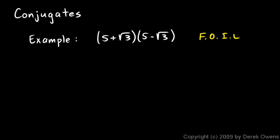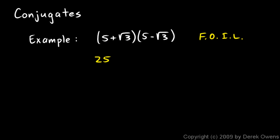I multiply first, outer, inner, and last. My first two terms are 5 times 5, so that's 25. The outer two terms are 5 times the negative square root of 3, so that's negative 5 root 3. The inner two terms are the square root of 3 times 5, which is positive 5 root 3. And my last two terms are square root of 3 times the negative square root of 3, so that's minus square root of 3 squared, which is just 3.